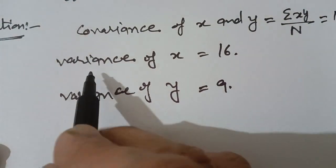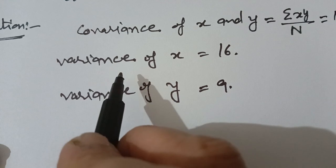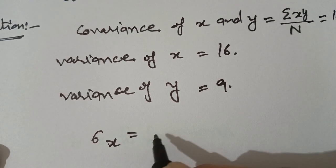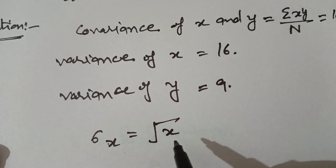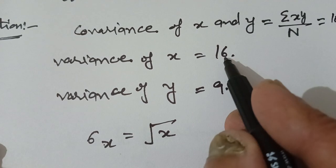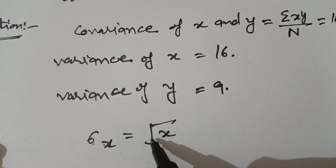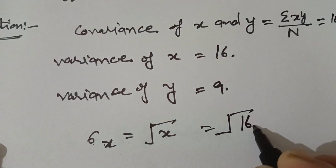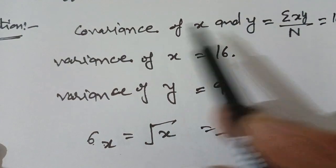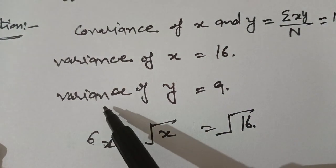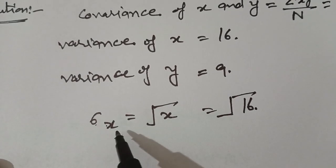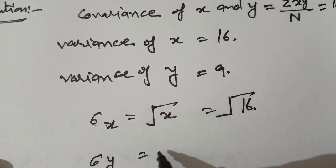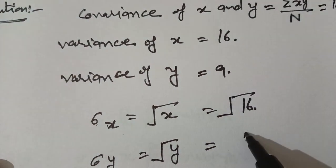Variance is the square of standard deviation. So standard deviation is the under root (square root) of variance. Standard deviation of x equals the under root of variance of x, which is under root of 16. The variance of x is 16 and variance of y is 9. So standard deviation of x is under root 16, and standard deviation of y is under root 9.